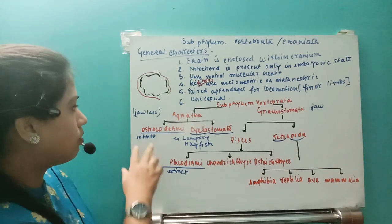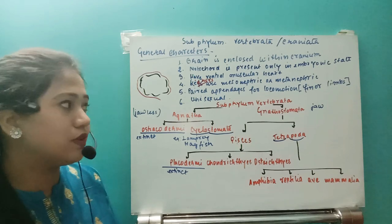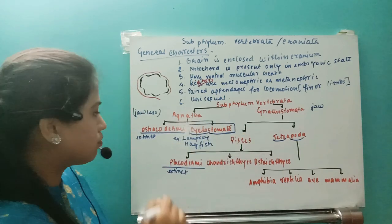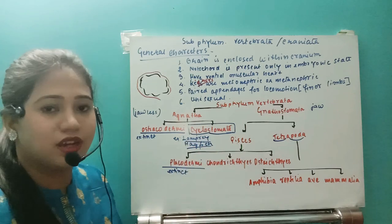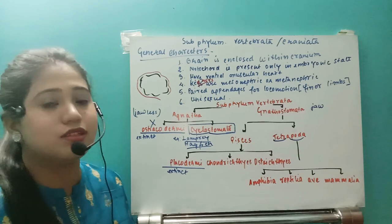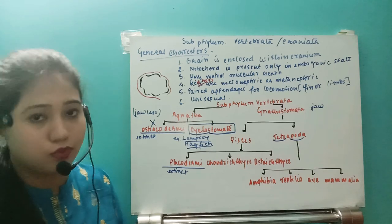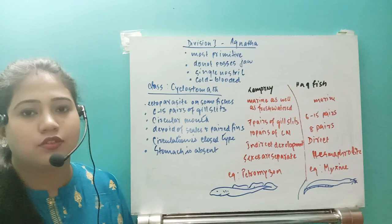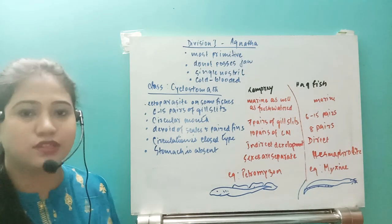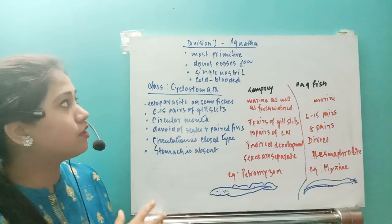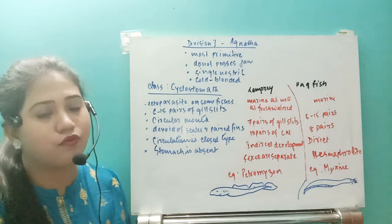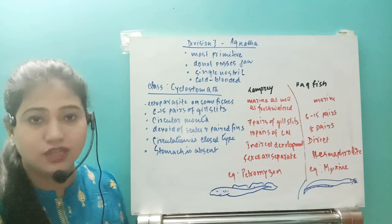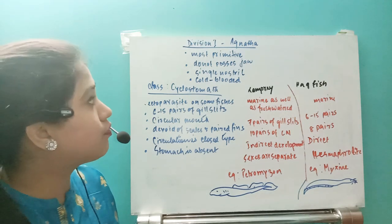That covers the classification of vertebrates. In the next part we will discuss Cyclostomata under Agnatha, specifically the differences between lamprey and hagfish. Ostracodermi are extinct so we will not study them. Now, Agnatha means those organisms which have a circular mouth and do not have jaws.